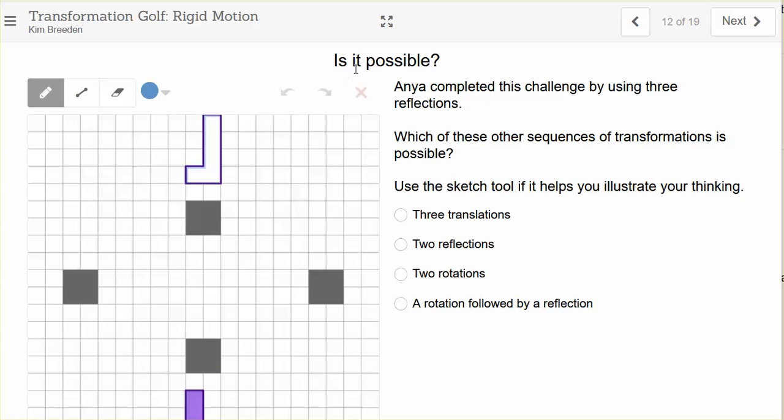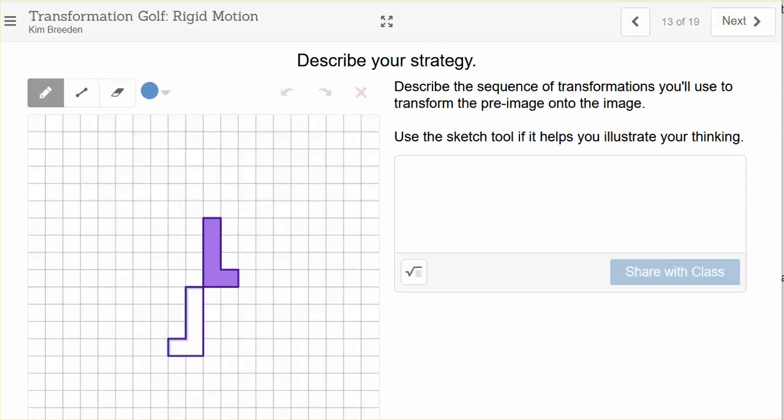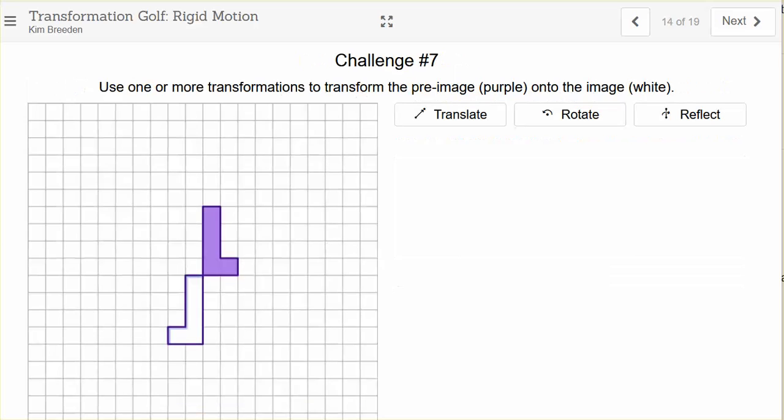Slide 12 you may skip. On slide 13, describe what you think you're going to do. Again, if the L is pointing in the wrong direction, you're probably going to need to do a reflection. You'll try that out and get it lined up in number 14.